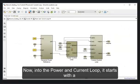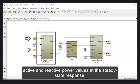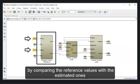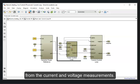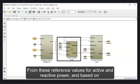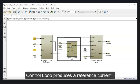Now, into the power and current loop. It starts with a dynamic power reference block, which ensures the specified active and reactive power values at the steady state response, by comparing the reference values with the estimated ones from the current and voltage measurements. From these reference values for active and reactive power, and based on the converter output voltage in alpha and beta, the power control loop produces a reference current.